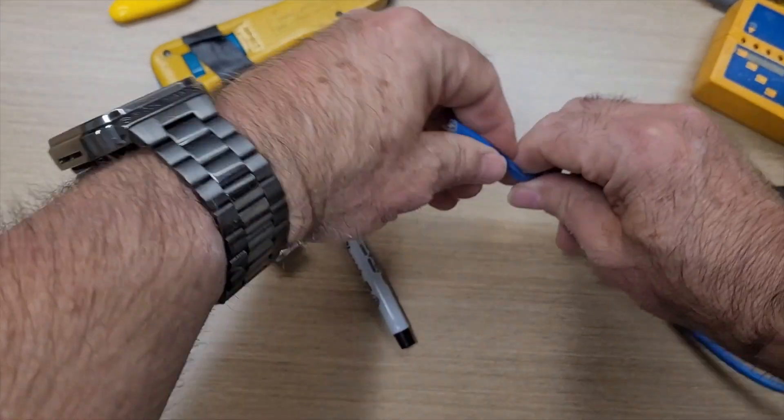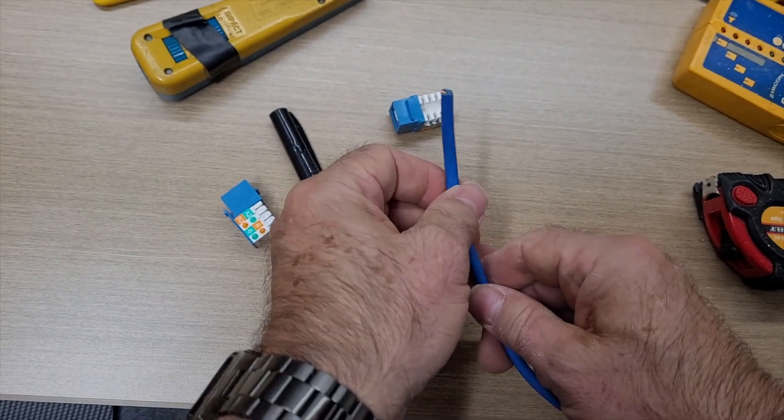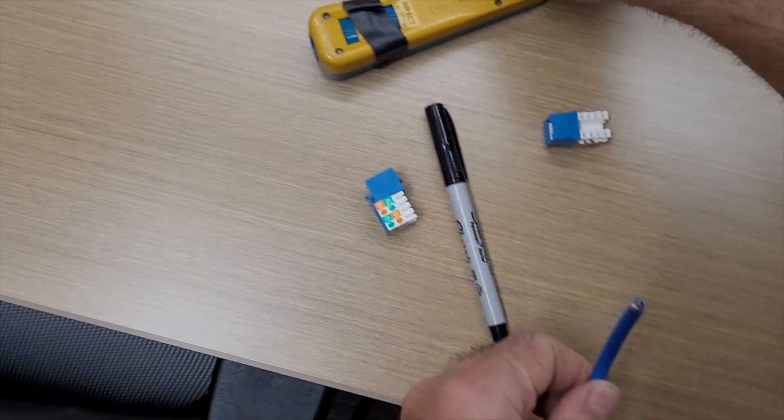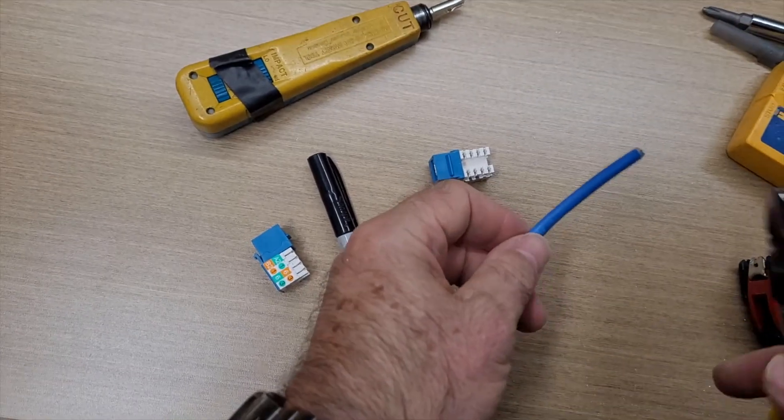Obviously, if you're building out a voice over IP phone network, you know that you have to use network cables instead of just traditional Cat3 phone wiring.